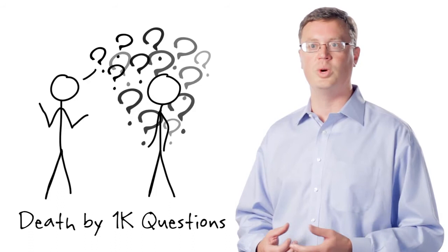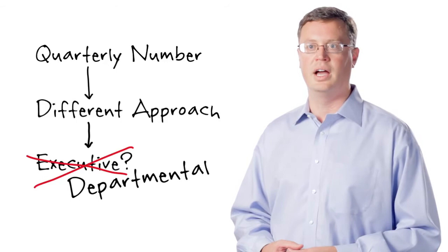And my manager is telling me to just ask more questions. If I'll only just engage the executive and just ask questions, then everything will turn out okay. And so I begin the death by questions. So a thousand questions over and over again, and I realize that approach is not working. So I've got to make my quarterly number and I'm going to pursue a different approach. So forget the executive selling, I'm just going to work the departmental opportunity.